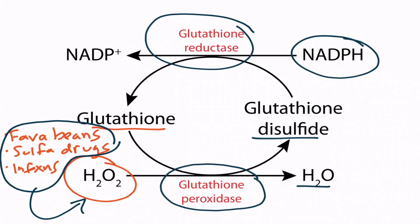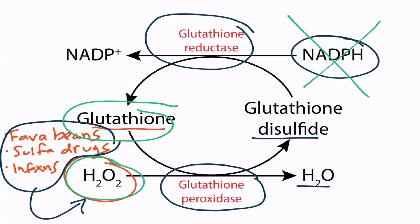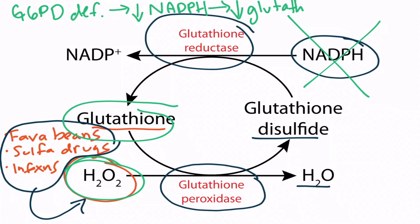In patients with a G6PD deficiency, NADPH cannot be produced, and thus glutathione cannot be regenerated. Red blood cells therefore experience an increase in oxidative stress in the form of hydrogen peroxide, which results in hemolysis. So patients with a G6PD deficiency will have decreased NADPH, which will result in decreased glutathione, which will result in hemolysis.